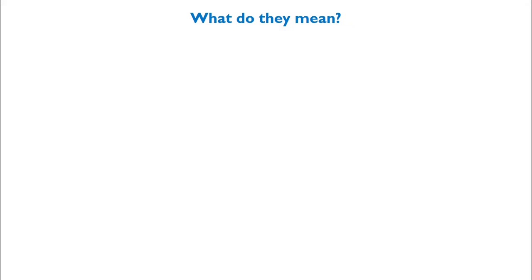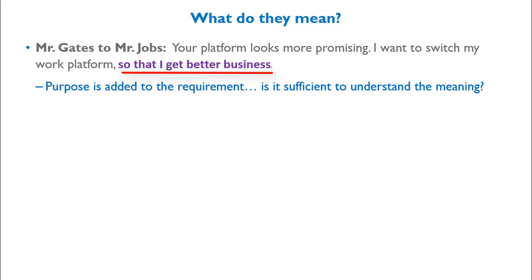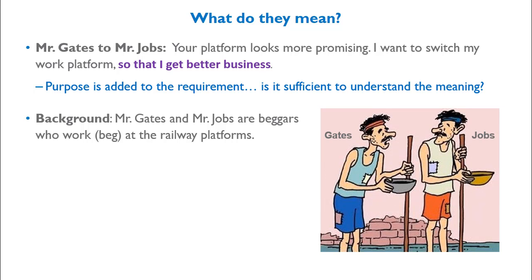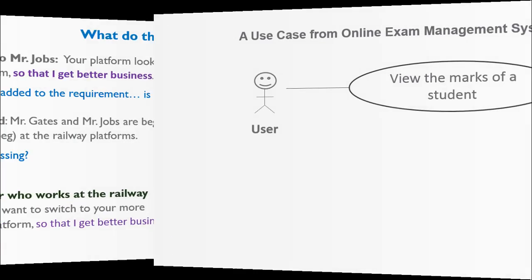Let us see one more statement where purpose is added. Mr. Gates to Mr. Jobs: 'Your platform looks more promising. I want to switch my work platform so that I get better business.' In this case, purpose is added to the requirement. Is it sufficient to understand the real meaning? Now let me tell you the background — Mr. Gates and Mr. Jobs are beggars who work at a railway platform. So what is missing? Let me revise the statement: 'As a beggar who works at a railway station, I want to switch to your more promising platform so that I get better business.' This time, I have more context about the beneficiary or user. Now let's apply this learning to the business requirement.